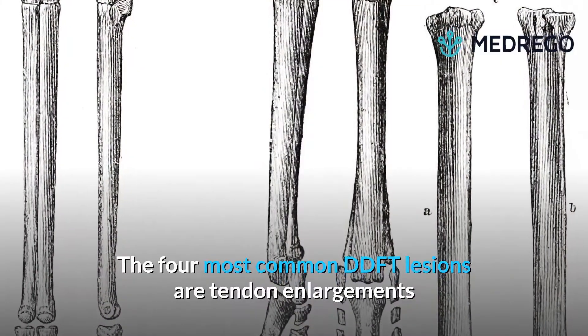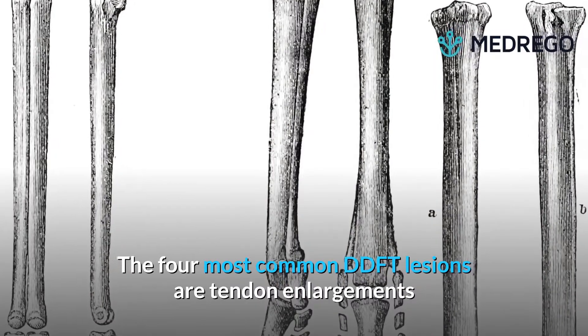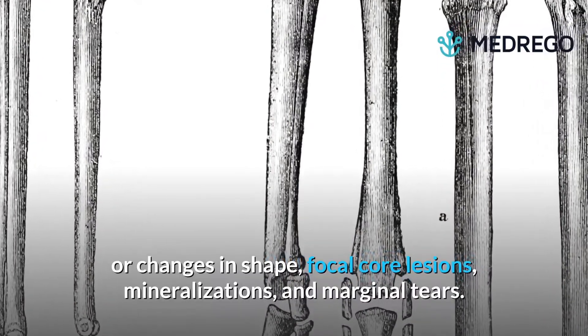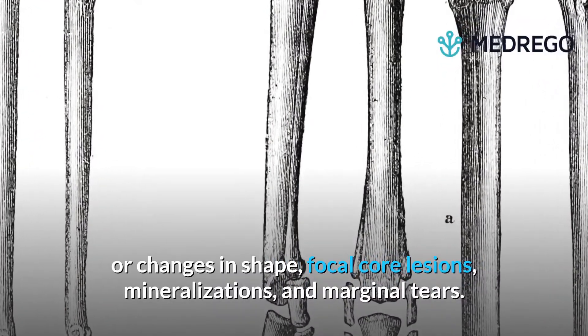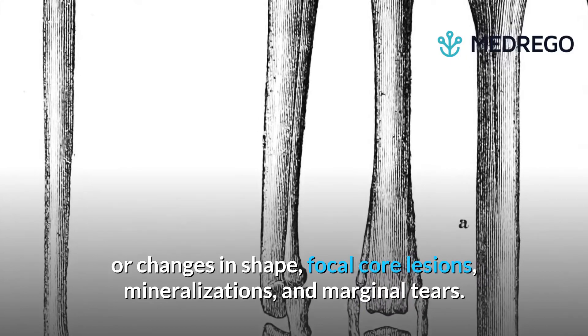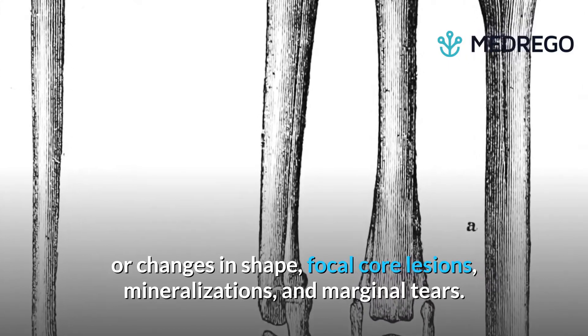The four most common DDFT lesions are tendon enlargements or changes in shape, focal core lesions, mineralizations, and marginal tears.